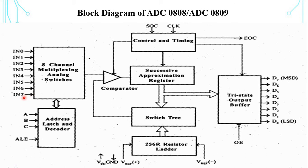The successive approximation register (SAR) performs 8 iterations to determine the digital code for the input value.